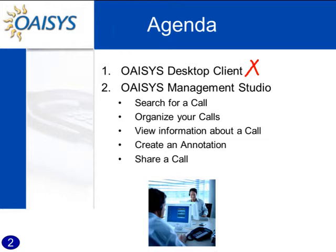Assuming your PBX gives us the real-time information stream or that we're doing Vox, we'll take a look at the functionality of the OASIS desktop client. The second piece of software is the OASIS Management Studio — the true backbone interface of the OASIS system, where you go to do 90% of the functionality OASIS has to offer. Among the topics we'll discuss: first and foremost, how to search for calls. Being able to find the call you're looking for is probably 60-70% of the battle. Once you can find the recording you want to listen to, everything else in this session is essentially just playing around with it.